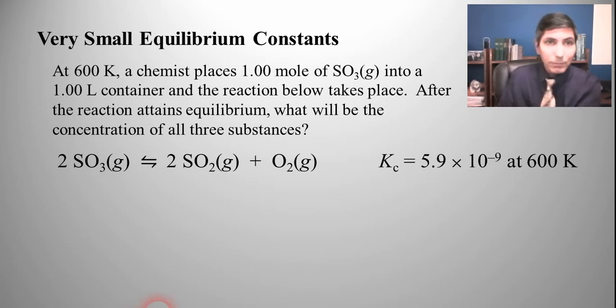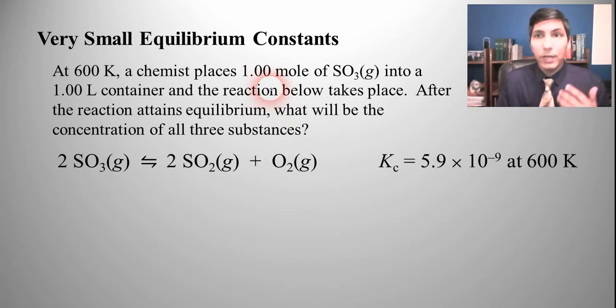Here's an example. At 600 kelvins a chemist places one mole of sulfur trioxide gas into a one liter container and the reaction below takes place. After the reaction attains equilibrium, what will be the concentration of all three substances?